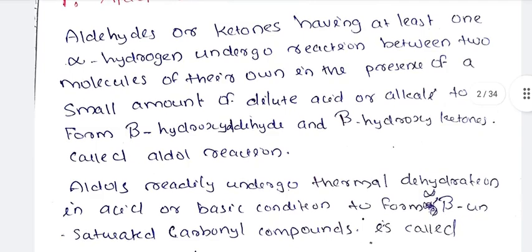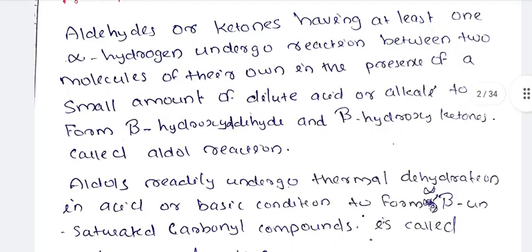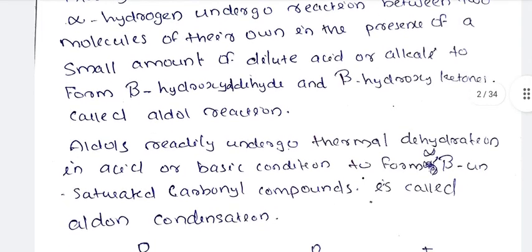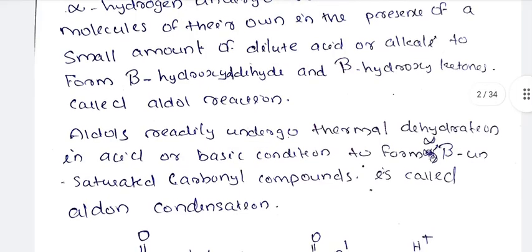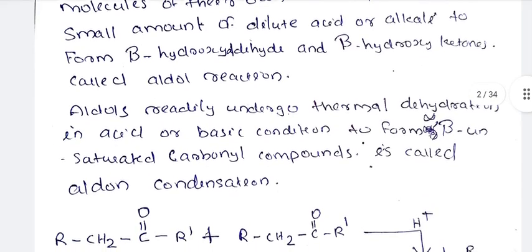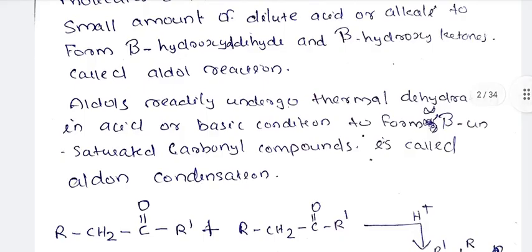The reaction occurs between two molecules reacting among themselves, in the presence of a small amount of dilute acid or alkali, to form beta hydroxy aldehyde or beta hydroxy ketones. That is why we have the aldol reaction.